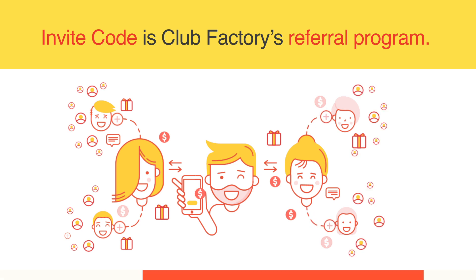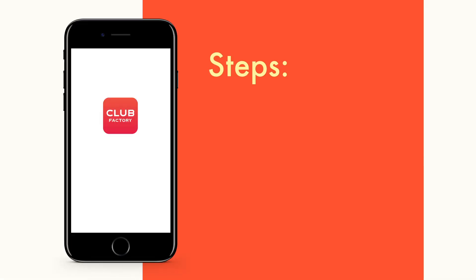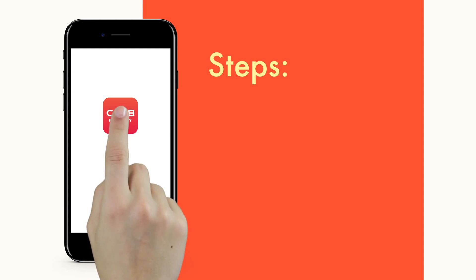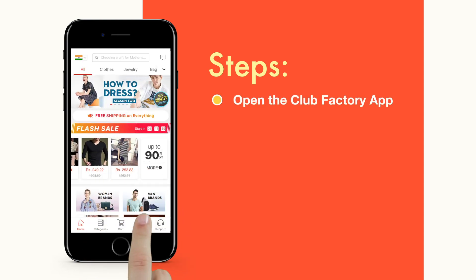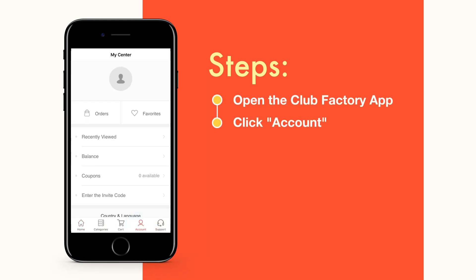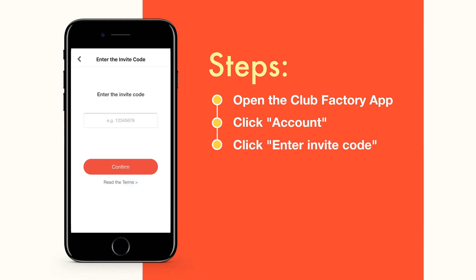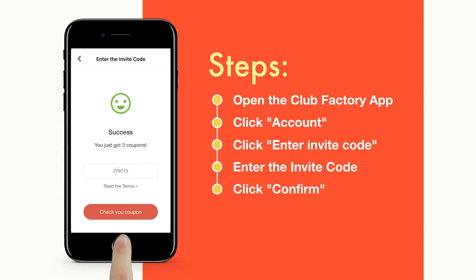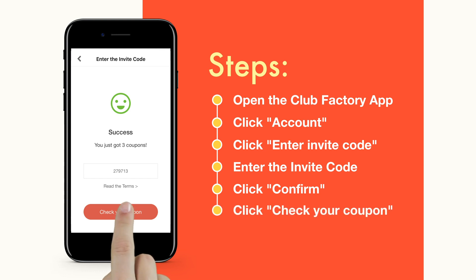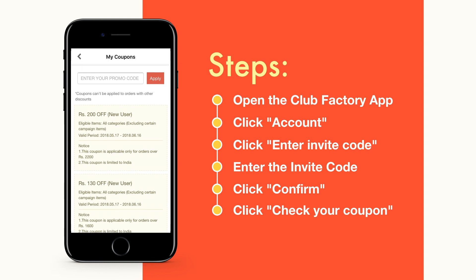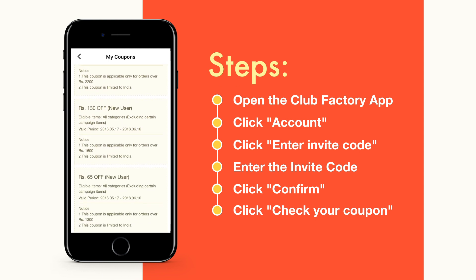I'm going to show you how you can use someone else's invite code. You open the app and click on account. Select 'enter invite code,' simply enter the code in the space provided, and click confirm. That's it, you did it. You can click on 'check your coupon' to see what the details of your discount are.